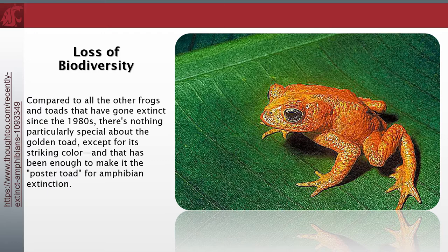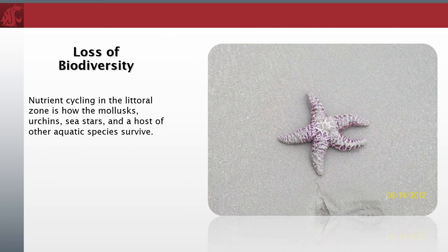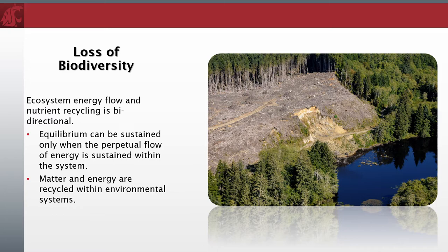We are eating away at life's insurance policy and meddling with the natural balance of the ecosphere. Early in the study of natural resource ecology, I told everyone that wildlife has needs provided by the ecosystems where they live. This is an expression of balance to each species. However, I then point out that this relationship is bi-directional, in that the environment has needs delivered by the species it hosts. Equilibrium can be sustained only when the perpetual flow of energy is sustained within the system.